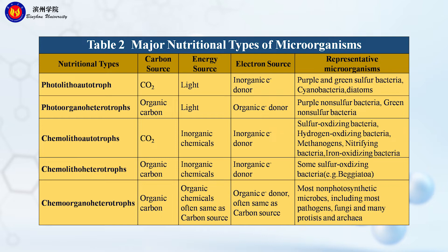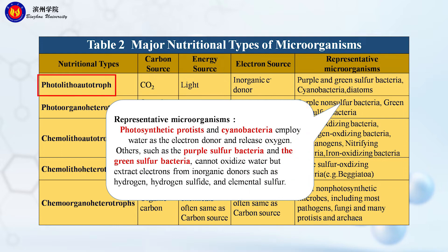First, let's look at photolithol autotrophs. These microbes use carbon dioxide as their carbon source, light as their energy source, and inorganic molecules as their electron sources. The representative microorganisms are photosynthetic protists and cyanobacteria.